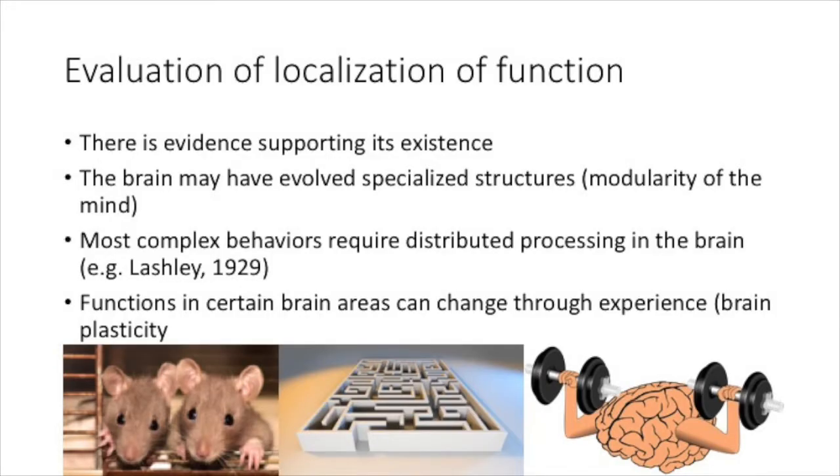There is a large body of research, primarily case studies such as Phineas Gage, supporting the notion of localization of function. According to the evolutionary theory Modularity of the Mind, the human brain has evolved structures that specialize in certain functions. In fact, there is evidence that some neural networks have a genetic component, such as the trisynaptic circuit in the hippocampus.